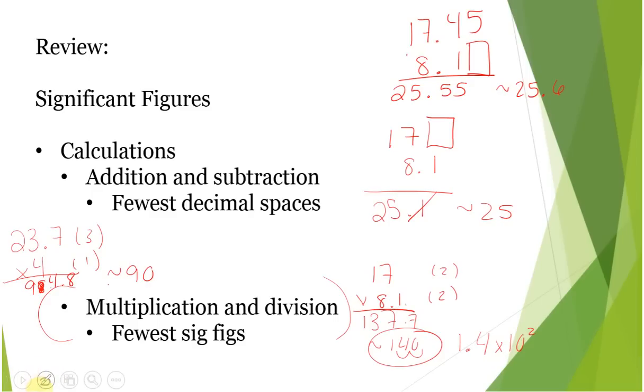As far as dividing goes, maybe you have 11.2, and you need to split that among 4 test tubes. This 11.2 divided by 4 gives us 2.8. Because this has 3 sig figs, this has 1, we're going to round this to 3.